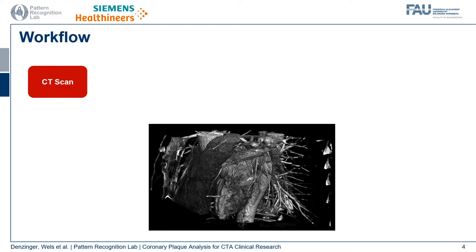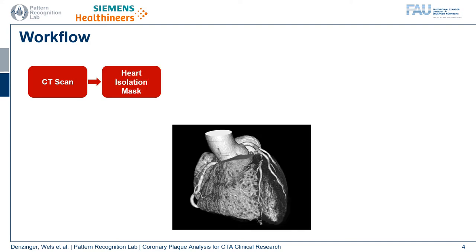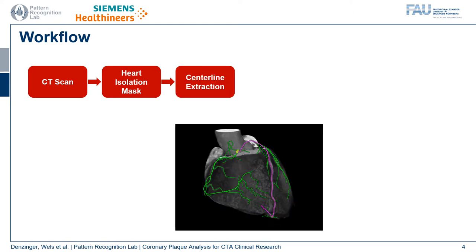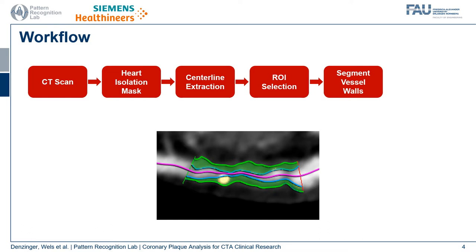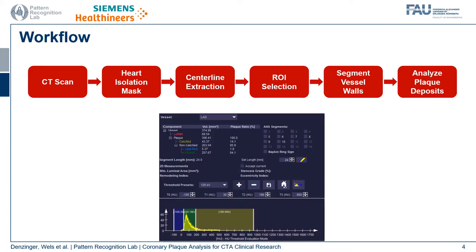The workflow under the hood looks as follows: you start with a computed tomography scan of the coronary vasculature, then in the first step the heart is segmented to enable further processing. Then the centerlines of the vessels are extracted so that you can select those parts of the vessel you want to analyze further, and within these regions of interest you can segment the vessel wall in order to analyze what kind of tissue is inside those plaque deposits.